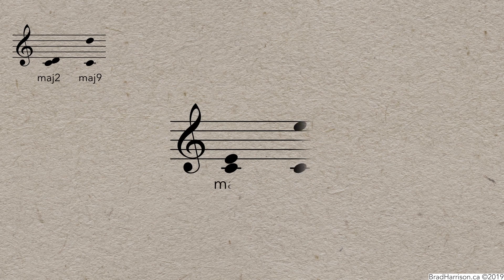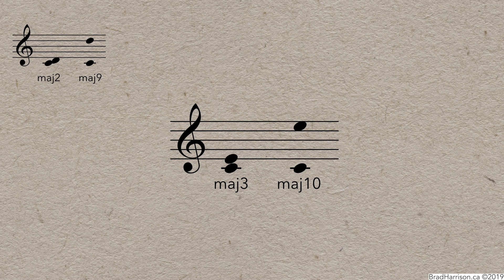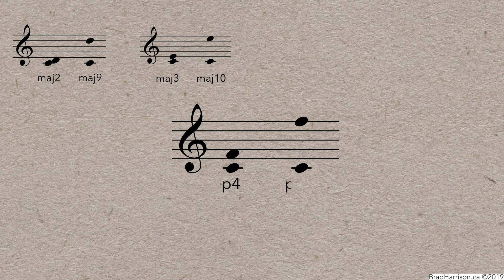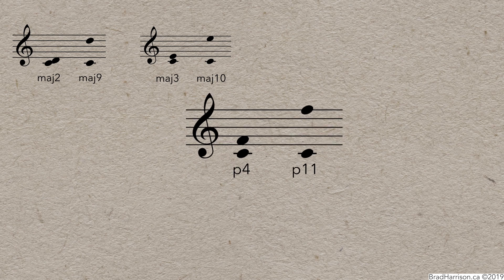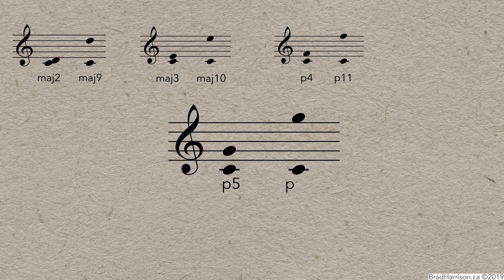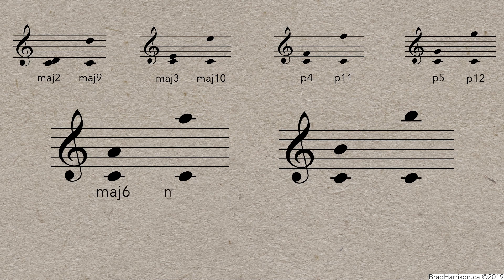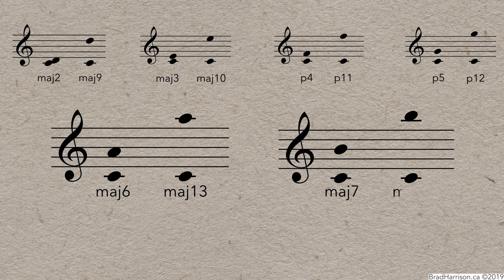All the larger compound intervals follow the same rules as their smaller counterparts. The major 3rd is related to the major 10th because they both deal with the same notes. The perfect 4th is related to the perfect 11th, the perfect 5th to the perfect 12th, the major 6th to the major 13th.